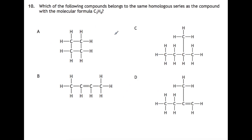Finally for this video, question 10. Which of the following compounds belongs to the same homologous series as the compound with molecular formula C3H8? C3H8 is of the general formula CnH2n plus 2, so it must be an alkane. Here you have a cycloalkane, so that would be general formula CnH2n. Here you have an alkene, also general formula CnH2n. Here you have an alkane, so this will be your answer. And finally, this one is an alkene.